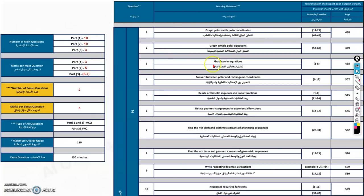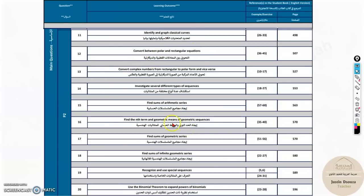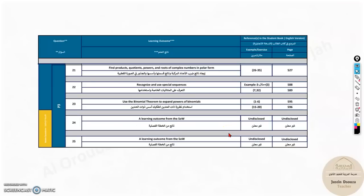As you might already have seen this exam scheme, there are three parts. Part 1 has 10 questions, each carrying 3 marks. Part 2 carries 5 marks each and there are 10 questions again — a bit more complicated than part 1. Lastly, part 3 is the writing part, where there are 3 questions for 6 or 7 marks, and 2 bonus questions worth 5 marks each. These can be any learning objective from term 3. If you want entire lesson details, you can click on the playlist to see all the lesson videos.